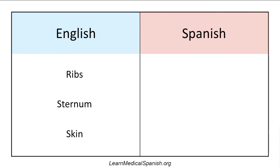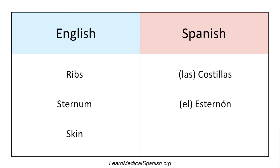Ribs — las costillas. Sternum — this is also kind of a cognate — el esternón. Skin — la piel.